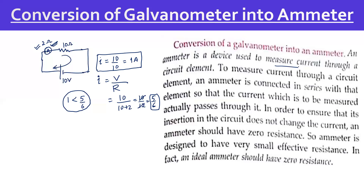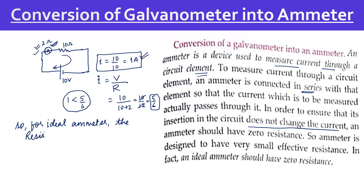An ammeter is a device used to measure current through a circuit element. It is always connected in series so that the current to be measured actually passes through it. In order to ensure its insertion does not change the current, after inserting the ammeter it should still give a reading of 1 ampere. So for an ideal ammeter, the resistance must be zero.